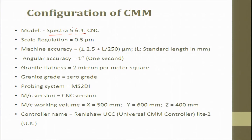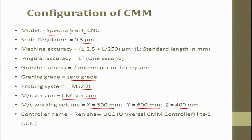Scale resolution is 0.5 micrometer. Machine accuracy is ±(2.5 + L/250) micrometers, where L is the standard length in mm. Angular accuracy is 1 second of angle. Granite flatness — the granite work table — is 0-grade granite with flatness of 2 microns per meter squared and zero thermal expansion. The probing system is CNC version. In the x direction we can move 500mm, in y direction 600mm, and in z direction 400mm. The controller is Renishaw UCC — Universal CMM Controller Light 2 from the UK.